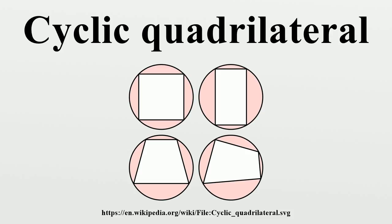Properties of cyclic quadrilaterals that are also orthodiagonal: for a cyclic quadrilateral that is also orthodiagonal, suppose the intersection of the diagonals divides one diagonal into segments of lengths P1 and P2, and divides the other diagonal into segments of lengths Q1 and Q2. Then a relation holds where D is the diameter of the circumcircle. This holds because the diagonals are perpendicular chords of a circle. These equations imply that the circumradius R can be expressed in terms of the diagonal segments, or in terms of the sides of the quadrilateral. A formula for the area K of a cyclic orthodiagonal quadrilateral is obtained directly by combining Ptolemy's theorem and the formula for the area of an orthodiagonal quadrilateral.